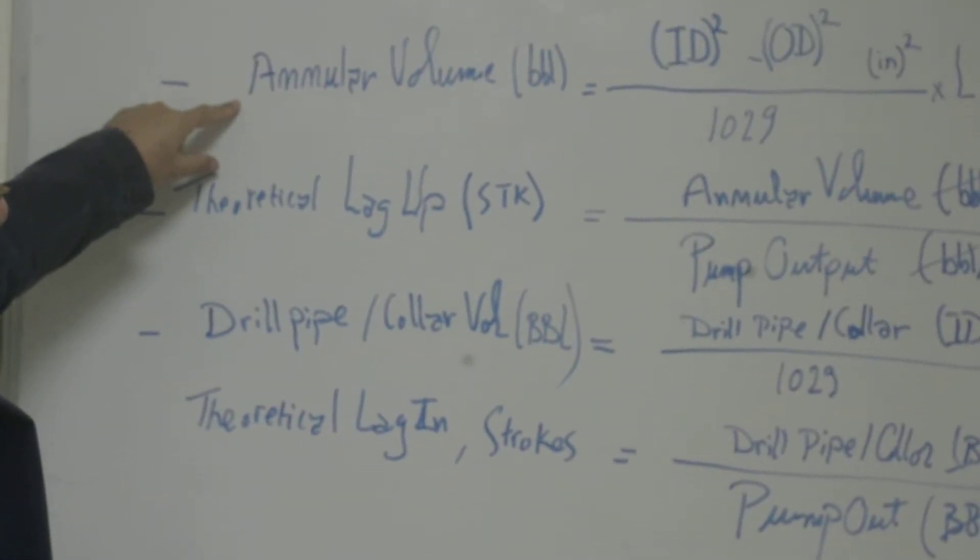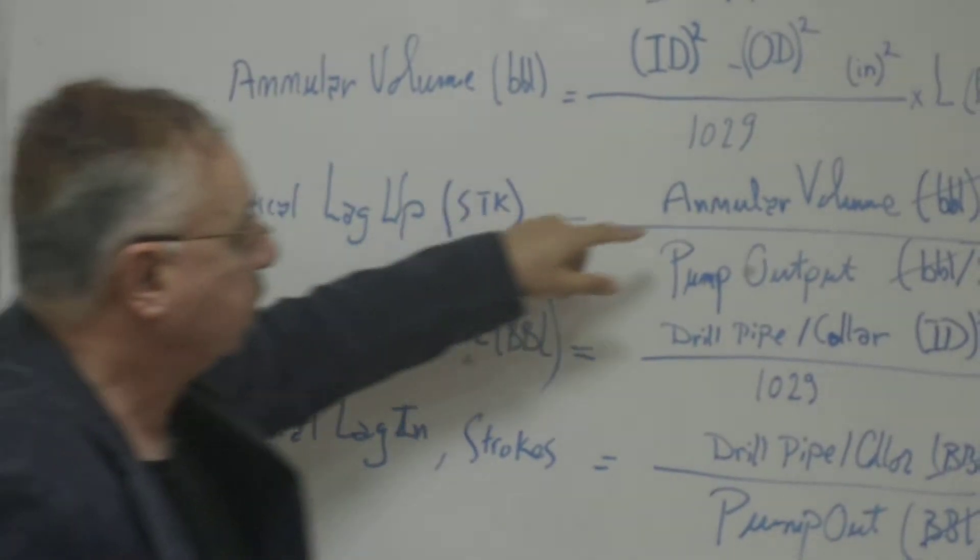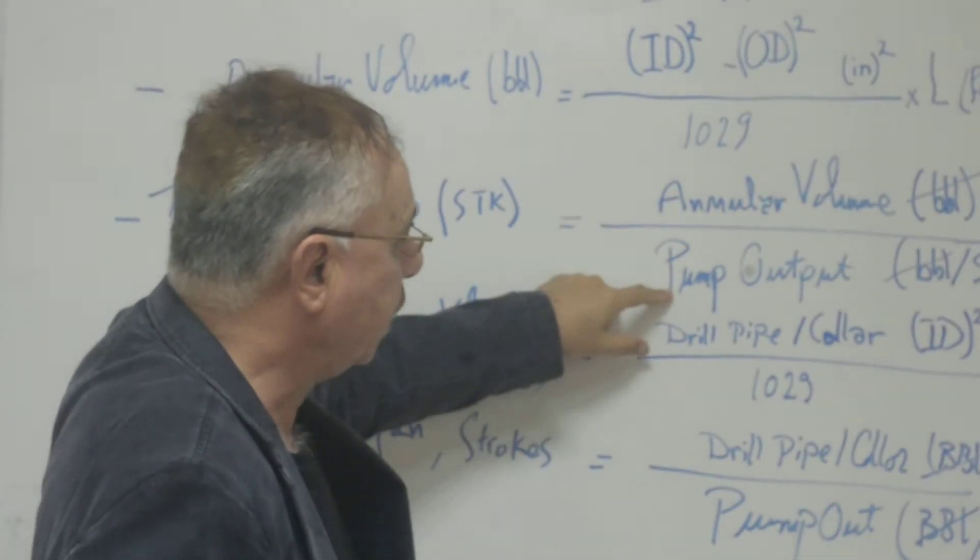Again, calculate the volume in the annulus, then divide this volume by pump output.